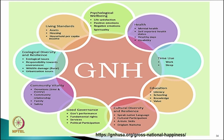Community vitality includes donation, time, money, relationships, family, and safety. Good governance covers government performance, fundamental rights, services, and political participation. Cultural diversity and resilience includes speaking native language, cultural participation, and artistic skills. Education covers literacy, schooling, and knowledge values. Time use — whether work and sleep are balanced — is also important. Along with these, health covers mental health, self-reported health status, healthy days, and disabilities. Psychological well-being mainly focuses on emotional well-being, life satisfaction, positive and negative emotions, and spirituality — all defining gross national happiness.